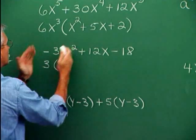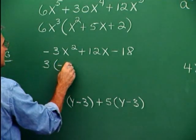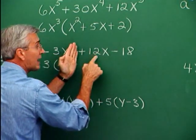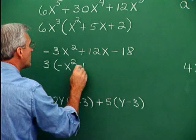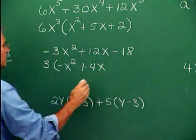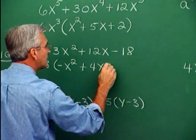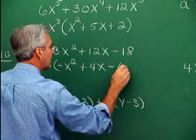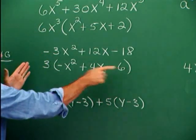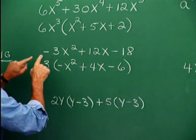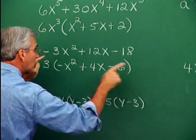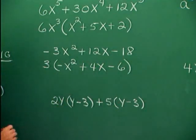Pull 3 out of this term and we're left with minus x squared. Pull 3 out of the next term — 3 out of 12 leaves 4, so this will leave 4x for that term. Pull 3 out of the negative 18, we're left with negative 6. And if we want to verify this as a correct factored form, we could multiply 3 times this polynomial to verify that we get what we started with.